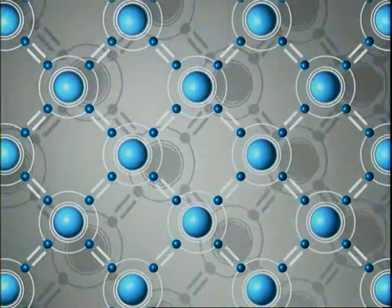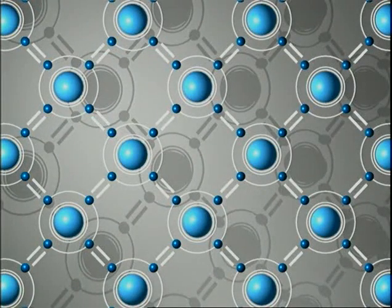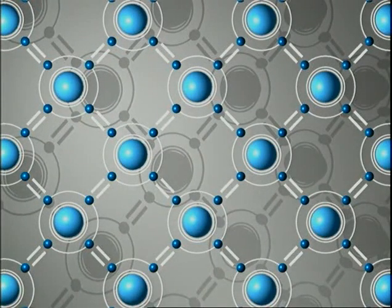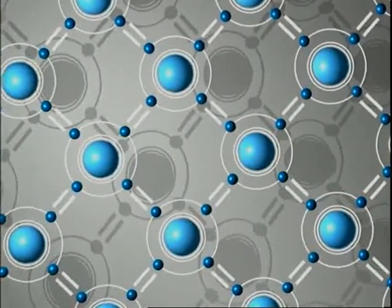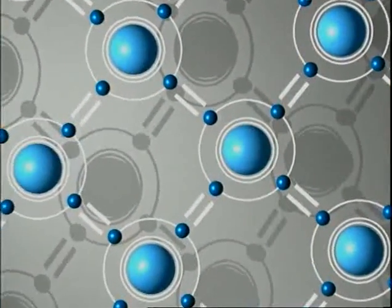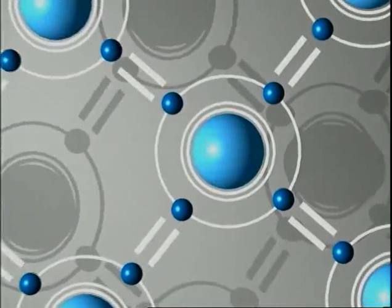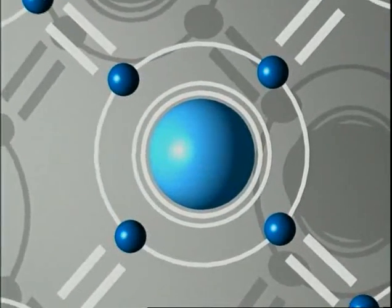Silicon is a semiconductor. Its atomic structure looks like this. Each silicon atom has four outer electrons. There are no free charge carriers. The pure silicon monocrystal is non-conductive at room temperature.